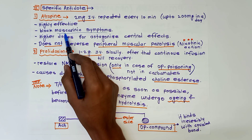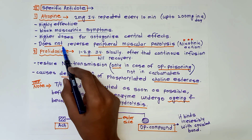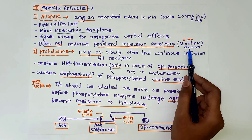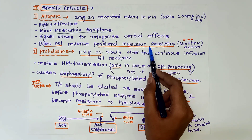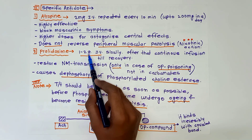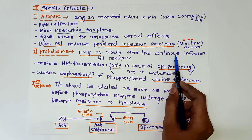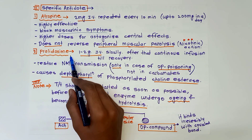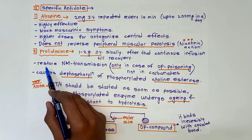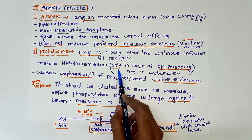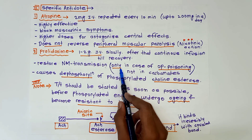An important point: atropine blocks muscarinic symptoms but does not reverse peripheral muscular paralysis, because that is a nicotinic action. To address peripheral muscular paralysis, we use pralidoxime: 1 to 2 grams intravenous slowly, followed by continuous infusion until recovery. Pralidoxime is a type of oxime and it restores neuromuscular transmission.